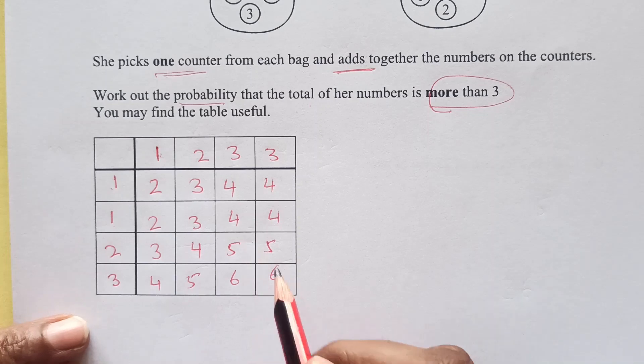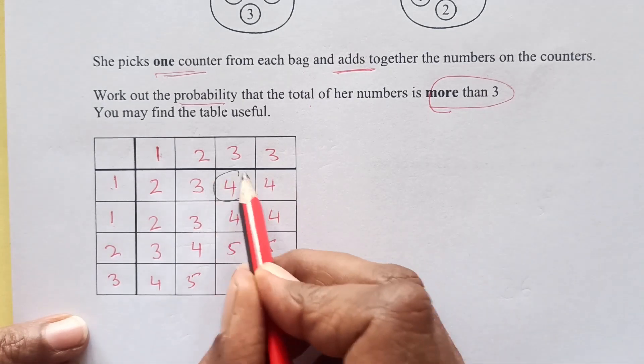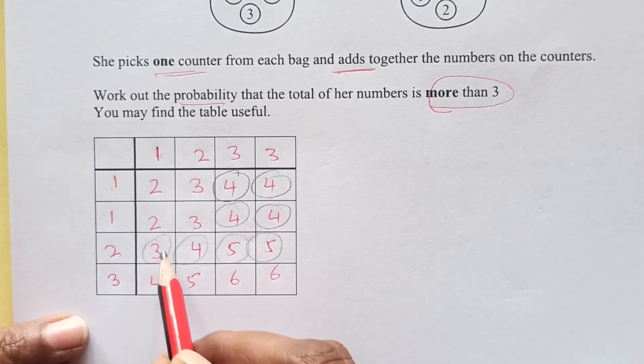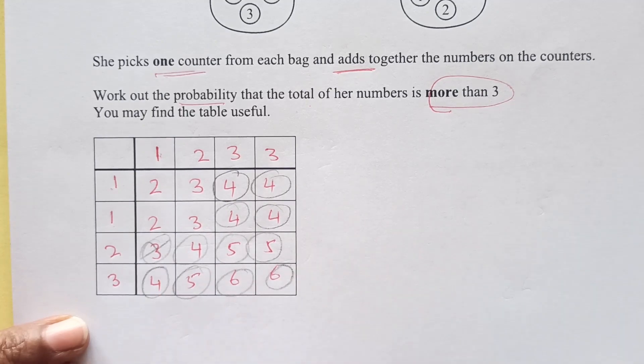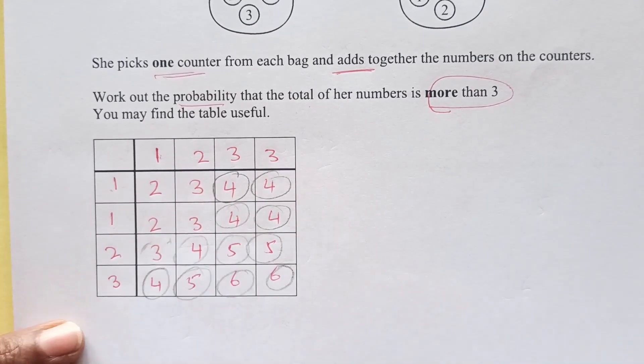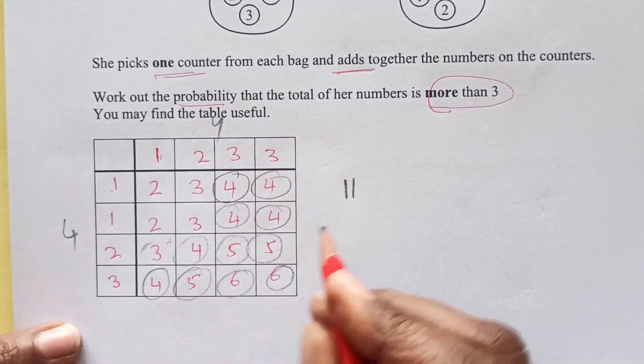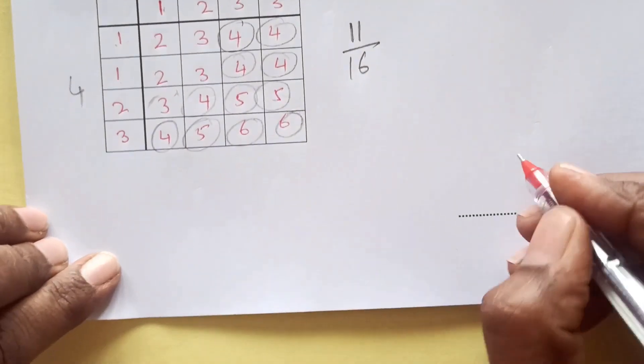Now we are looking for more than 3. All these are more than 3: 1, 2, 3, 4, 5, 6, 7, 8, not this one, 9, 10, 11. So there are 11 outcomes out of how many? These are 4 here, 4 here. 4 times 4 is 16. So 11 over 16 will be the probability.